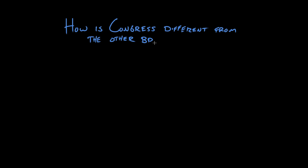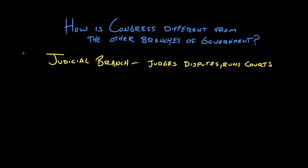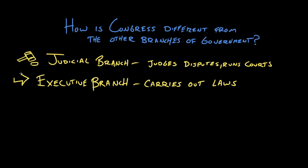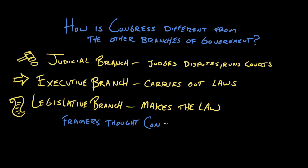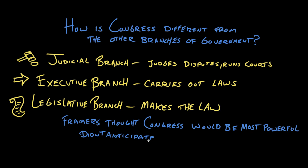How is Congress different from the executive branch or the judicial branch? The way the framers understood it, each one would have their own job. The judiciary was there to judge disputes and run the court system. The executive was there to carry out the laws. And the legislature's main job was to make the law. At the time, everyone thought that the big gorilla in the room was Congress — that it would be by far the most powerful. The framers simply did not anticipate how powerful both the judiciary and the president would become over time.